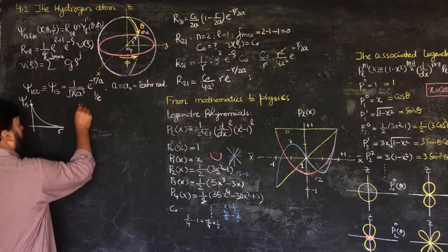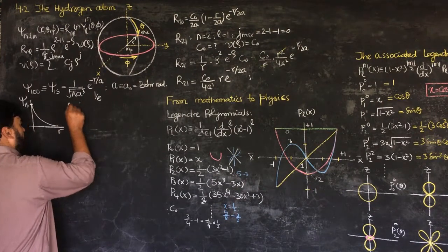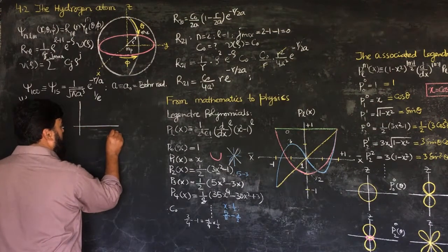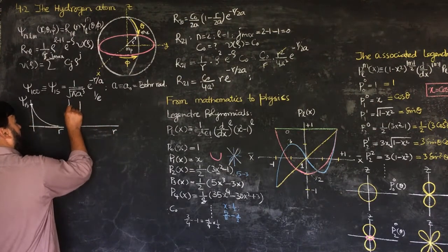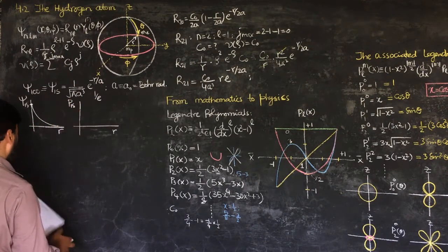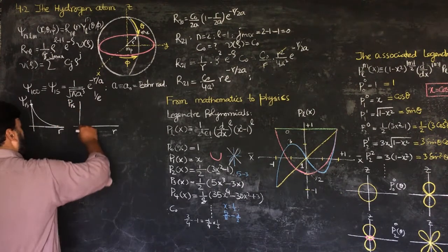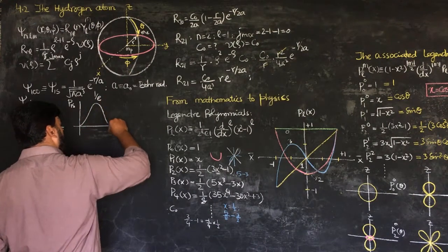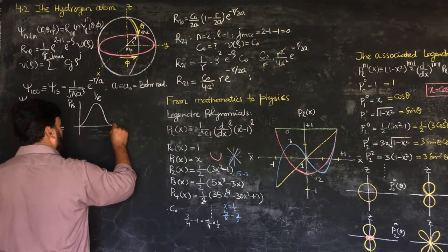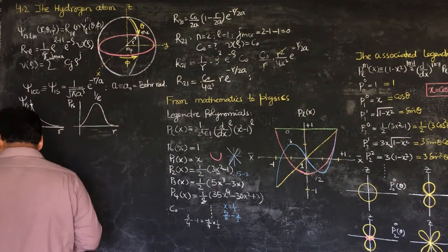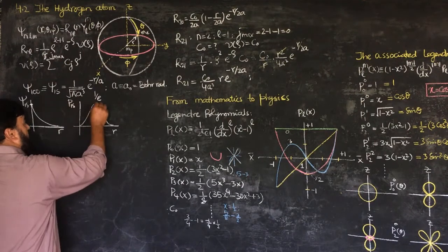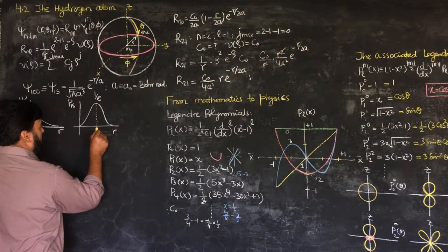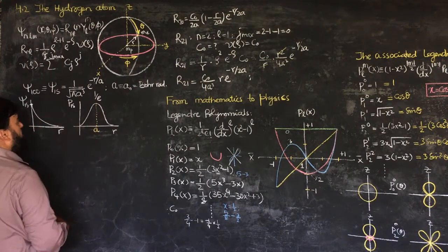And if I plot the probability of this function, then if on this side I am having R and this is the probability of 1S, then it will be somehow like this. And it is peaked, it means the maximum probability is occurring when R is equal to A, the Bohr radius.